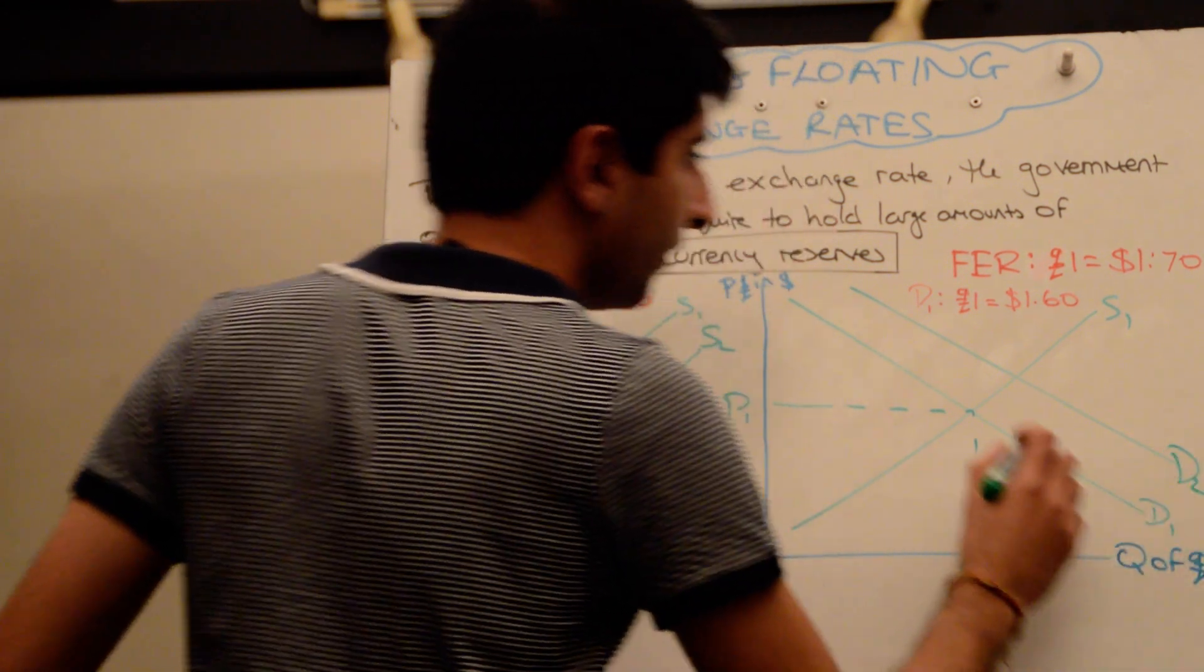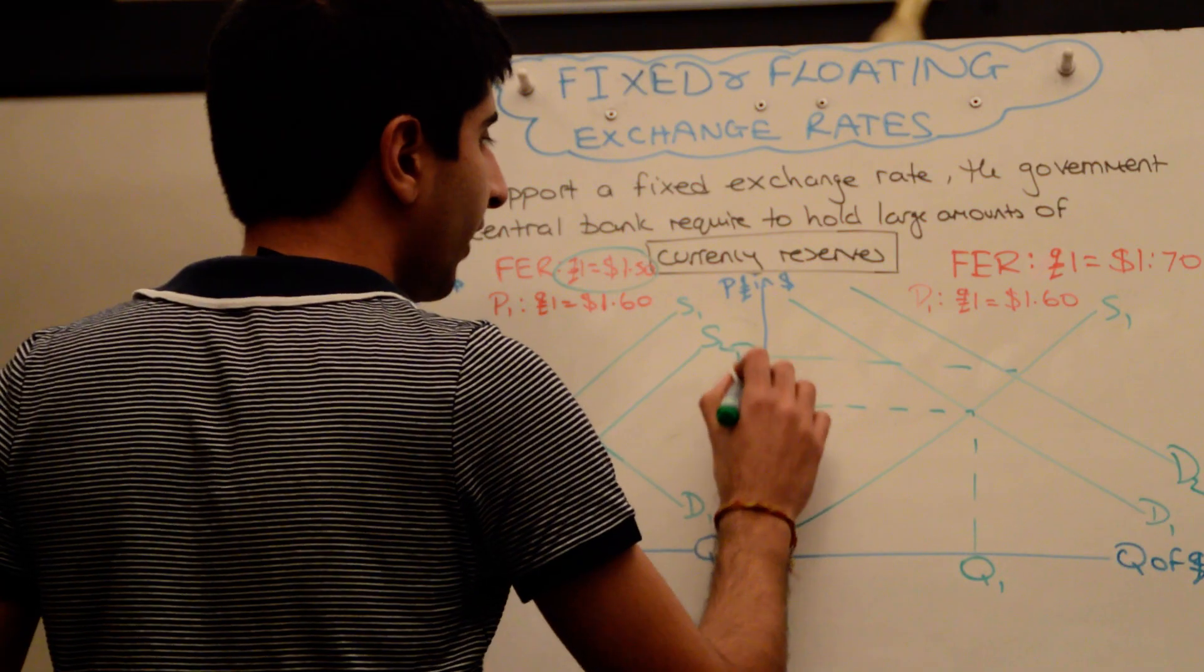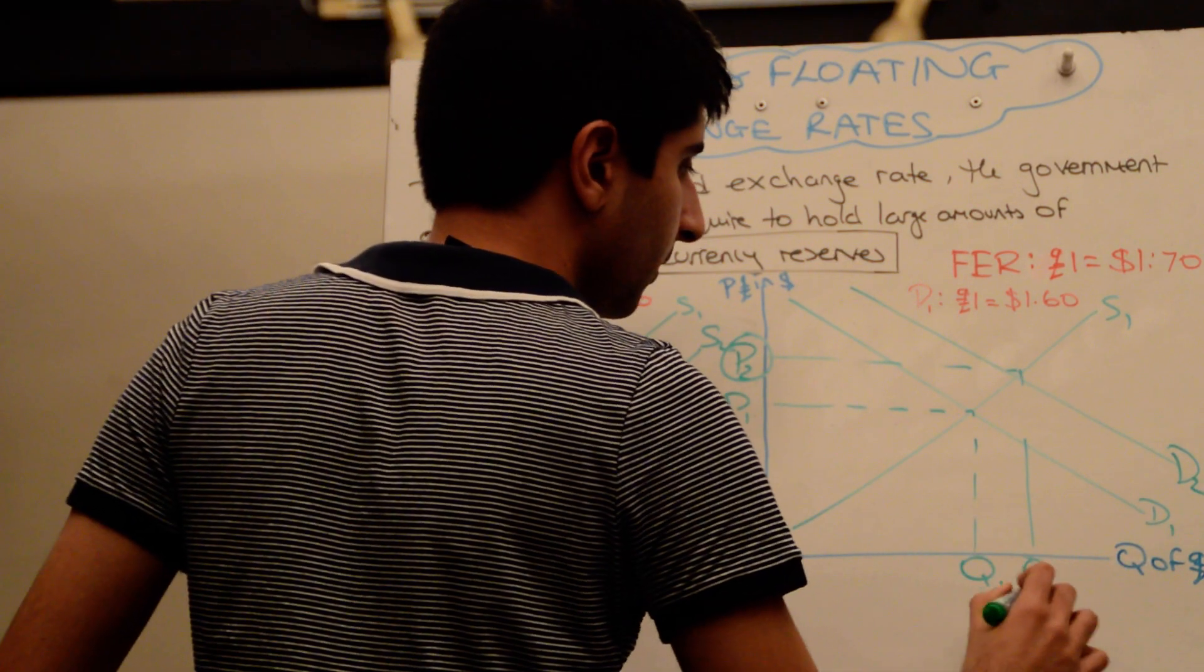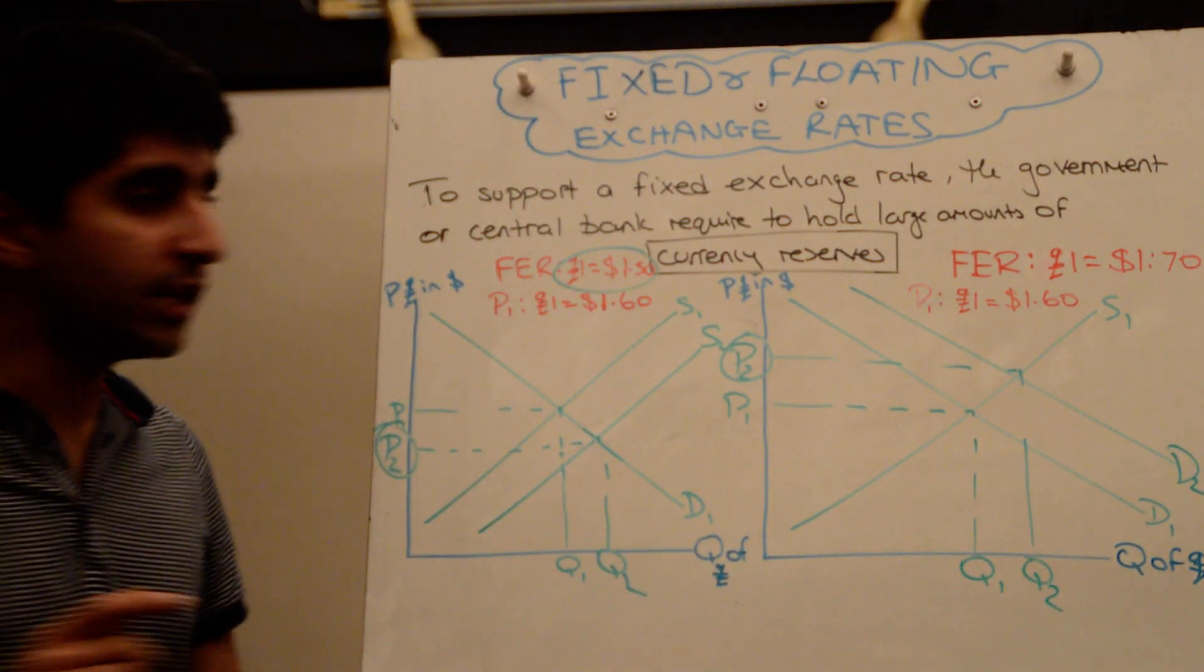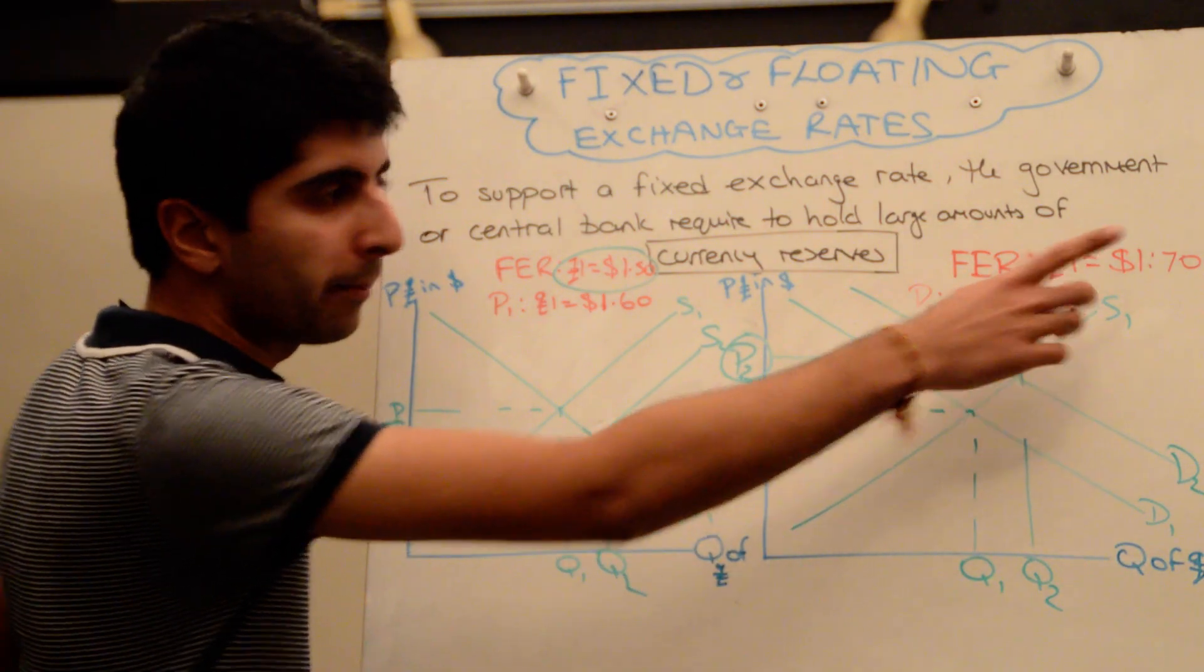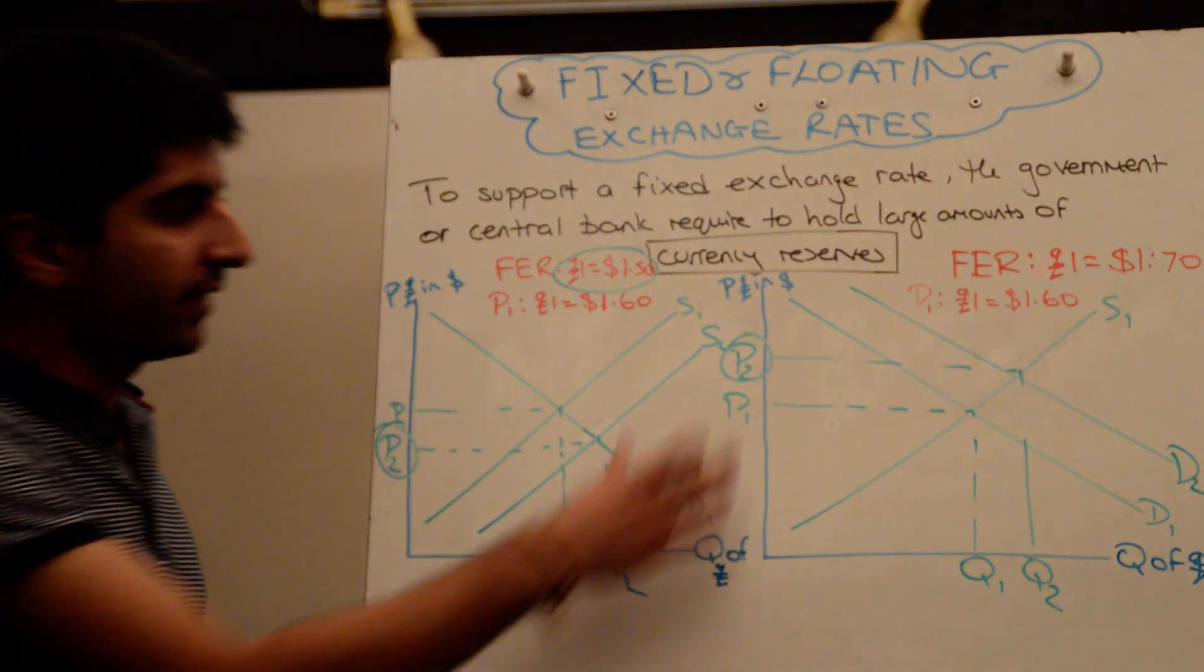That will increase demand for the pound, shifting demand to the right, increasing the value of the pound to P2. And that increased exchange rate should hopefully now equal one pound as $1.70. That's the idea here.